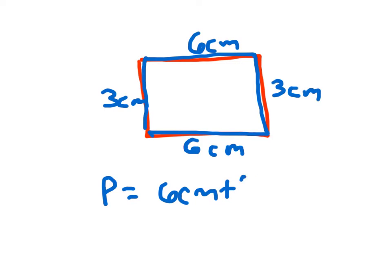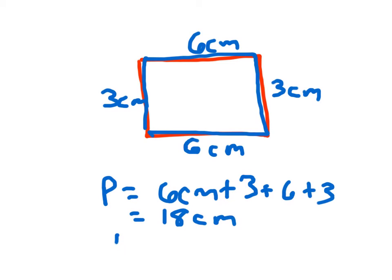6 plus 3 plus 6 plus 3, and all those are centimeters. That's 9 plus 9, which equals 18 centimeters. When we're talking about area, what we're doing is we're actually figuring out what is inside a figure. What's inside the figure.